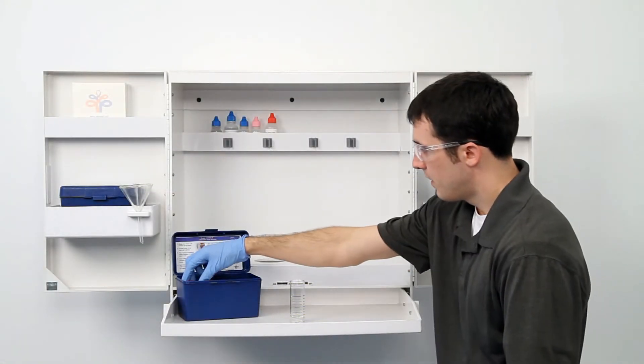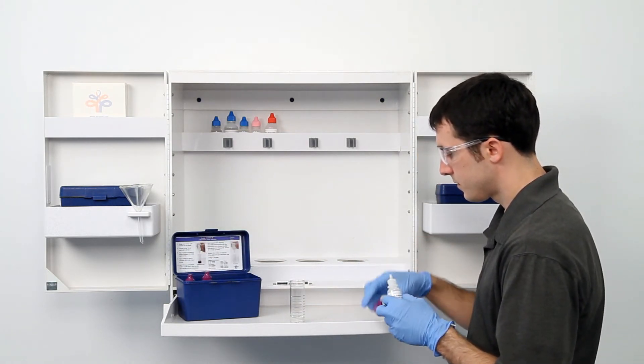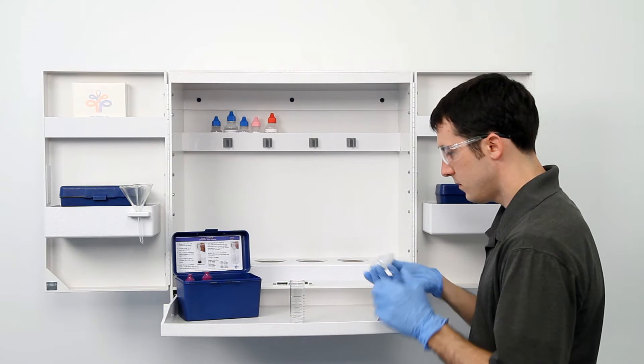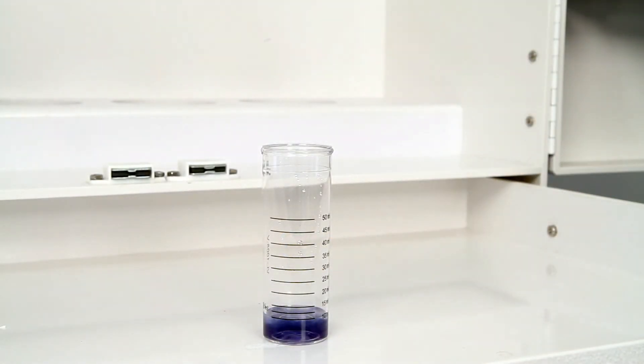The next step according to the endpoint ID procedure is to add five drops of starch indicator. Hold the bottle vertically to get a consistent drop size, and remember to swirl the vial after the addition of each reagent.